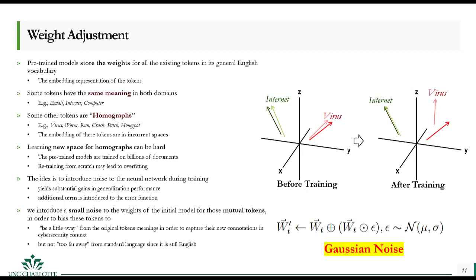Pre-trained models return embedding representations of tokens where these representations preserve semantic and contextual meaning according to the training corpus — in our case, general English. Some words such as email, internet, and computer have the same meaning in both general and cybersecurity language, while there are homographs — words that may have different meanings in different domains. For example, words like virus, worm, honeypot, and patch have different meanings in cybersecurity compared to general English. The objective is to modify the weights for these words during training so the embedding returns the correct vector representation.